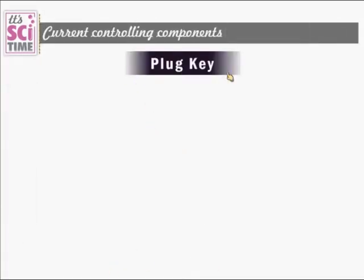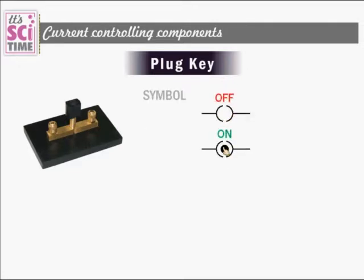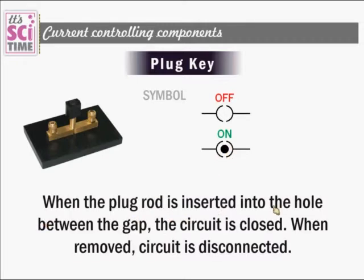The second controlling component is the plug key. The plug key attaches by inserting a plug into the switch. This is also a switch. Here are its symbols: one for off mode and one for on mode when the plug is fixed. When the plug rod is inserted into the hole, the circuit is closed; when it is removed, the circuit is disconnected.